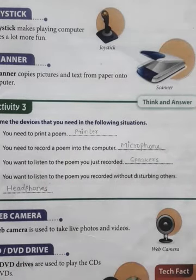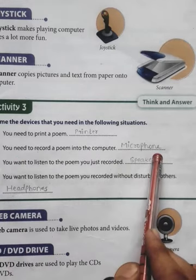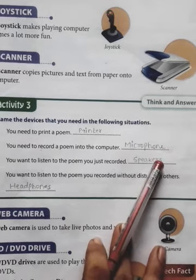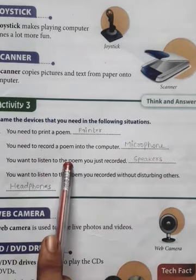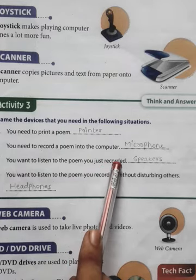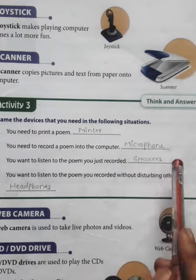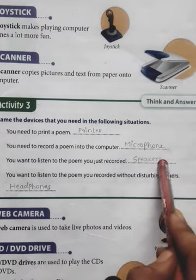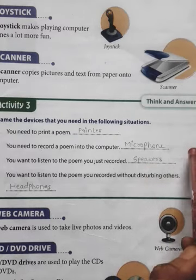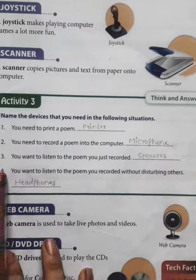Next: you need to record a poem into the computer. Just now we saw that to record anything into the computer we use a microphone — M-I-C-R-O-P-H-O-N-E, microphone. Third one: you want to listen to the poem you just recorded. To listen to anything we use headphones or speakers. You can write headphones — H-E-A-D-P-H-O-N-E-S — or speakers; both are correct.